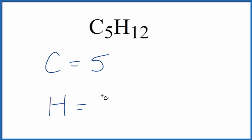For hydrogen, we have 12. So the total number of atoms in C5H12 is 12 plus 5, 17 total atoms.